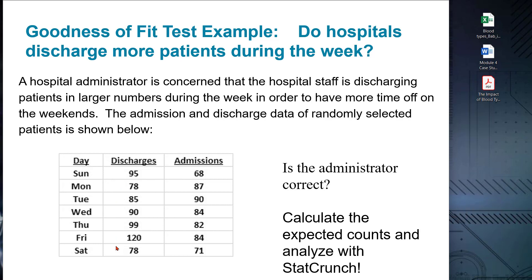In this way, the goodness of fit test is just like a one-sample t-test. Looking at this data, we examine the discharge counts to see if there is a significant pattern. The null hypothesis is that the observed data follows the specified theoretical distribution. The alternative hypothesis is that the observed data does not follow the specified theoretical distribution.